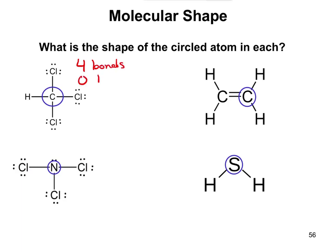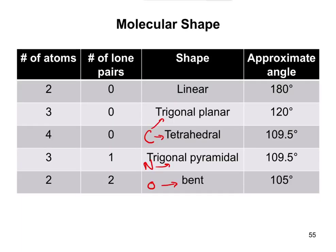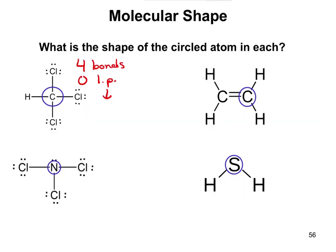zero lone pairs. If we go to our table, four bonds or four atoms, no lone pairs, that's going to be tetrahedral. So tetrahedral.